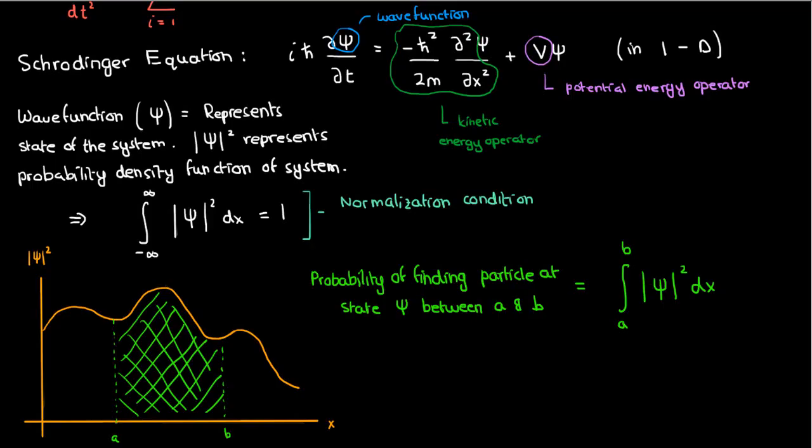Rather, I can only tell you the probability at which I'll find the particle in certain regions. So if you took a measurement of the position of a particle with this example wave function, there's no way for you to know exactly where the particle is — you can only make educated guesses based on the probabilities of finding particles within certain regions. You could say that it's likely you'll find the particle near the peak of the wave function distribution, and it's unlikely you'll find the particle at the dip. However, you can't predict for certain what position you'll measure when you actually make the measurement.